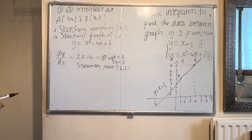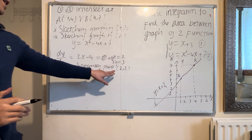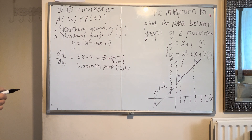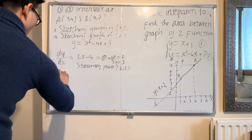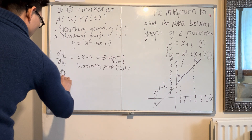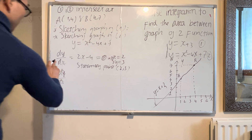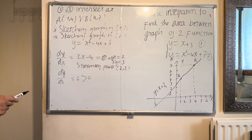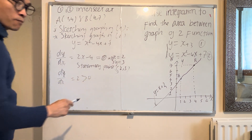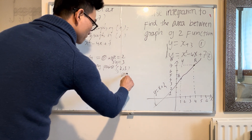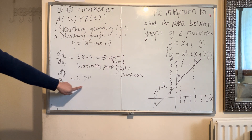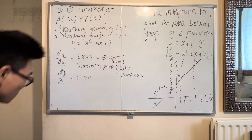Before sketching, determine whether the stationary point is a minimum or maximum. Take the second derivative — you get 2, which is always positive. Since it is positive, the turning point is a minimum.